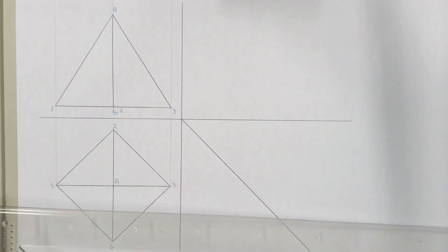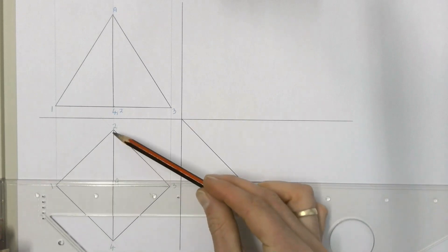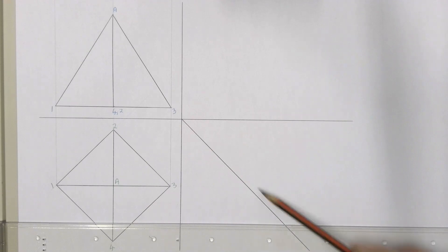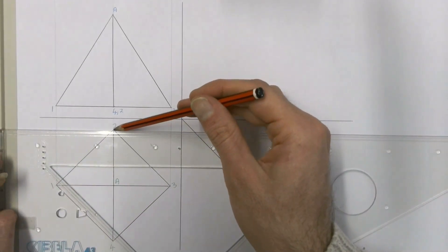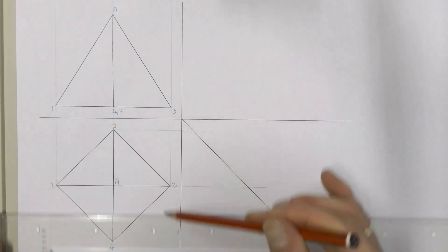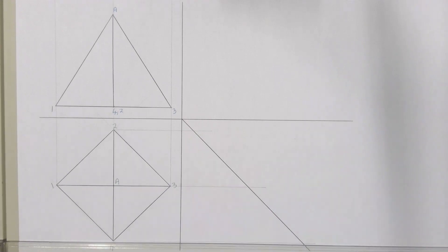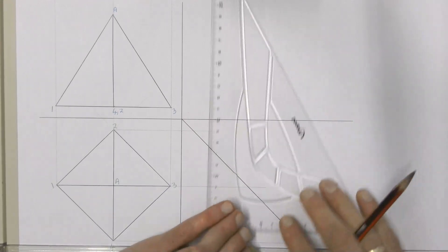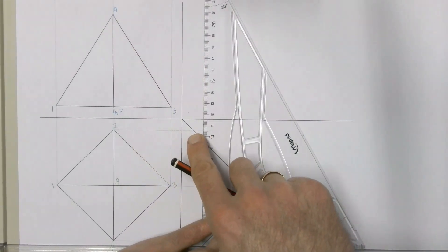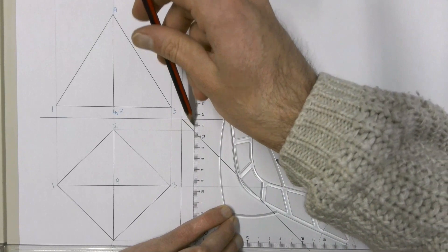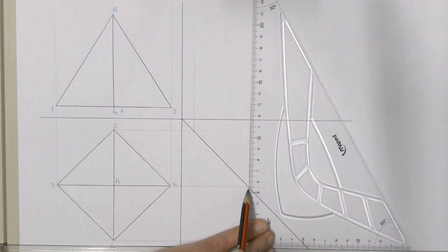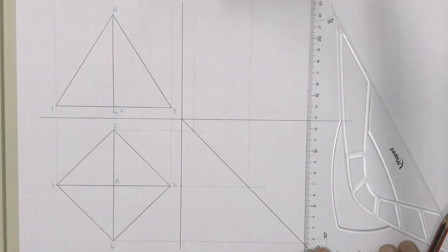To get our left view, we project each of the corners and the apex from our top view across onto our 45-degree line using light construction lines. Then we project straight up from where those light lines intersect the 45-degree line — we call that the intersection point — and project those points up into where we want our left view.